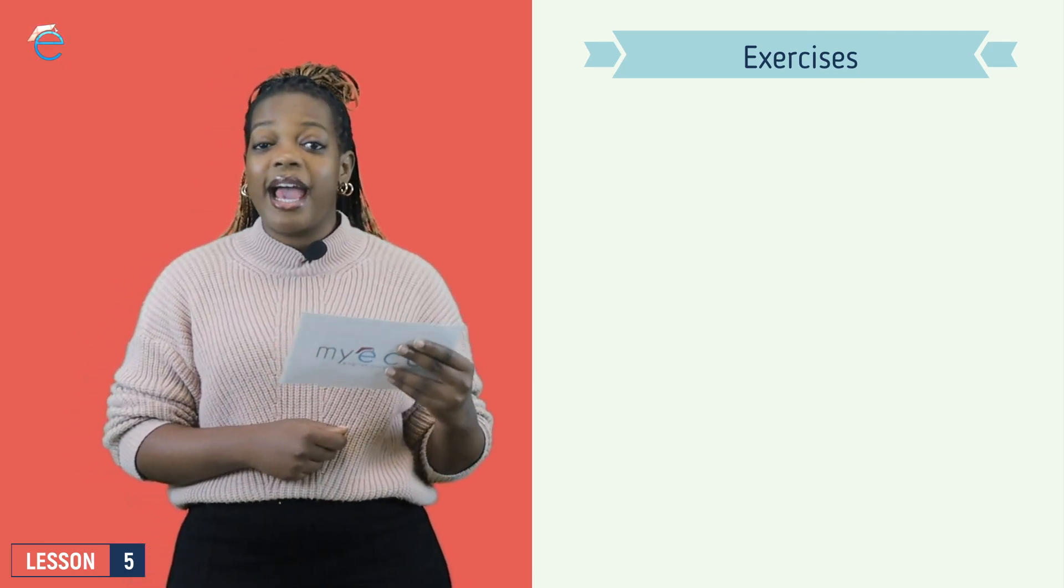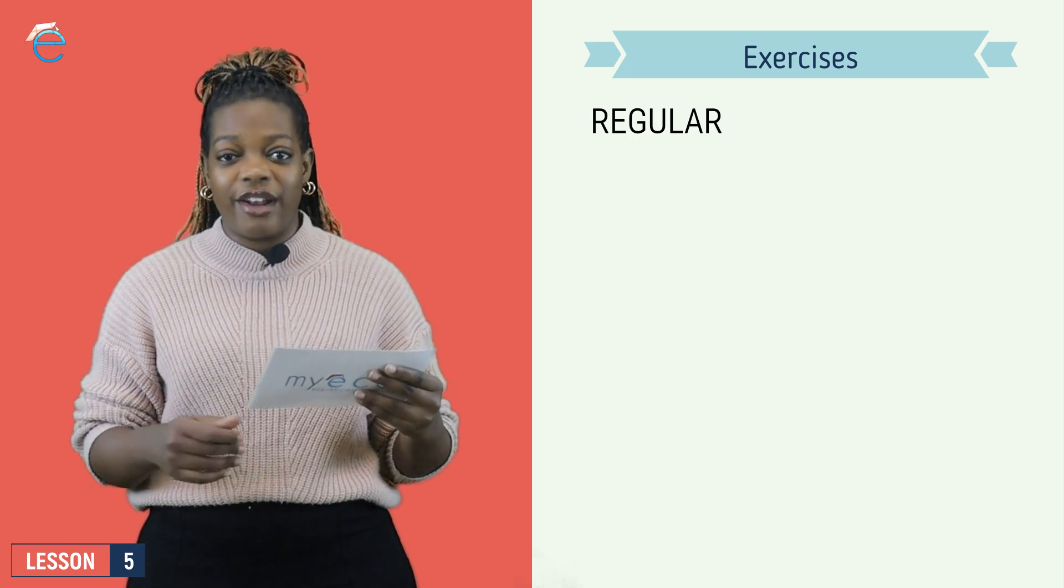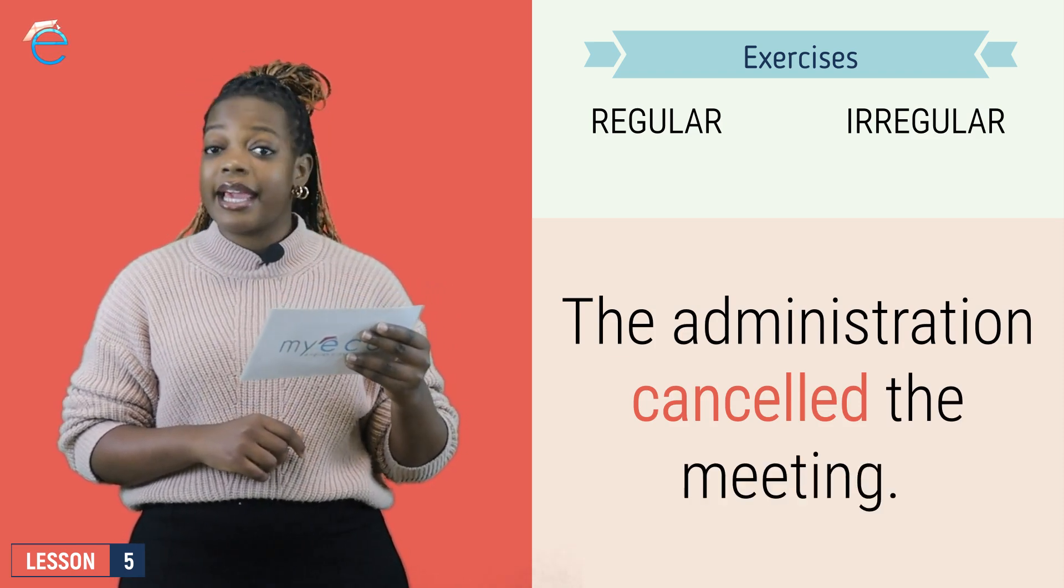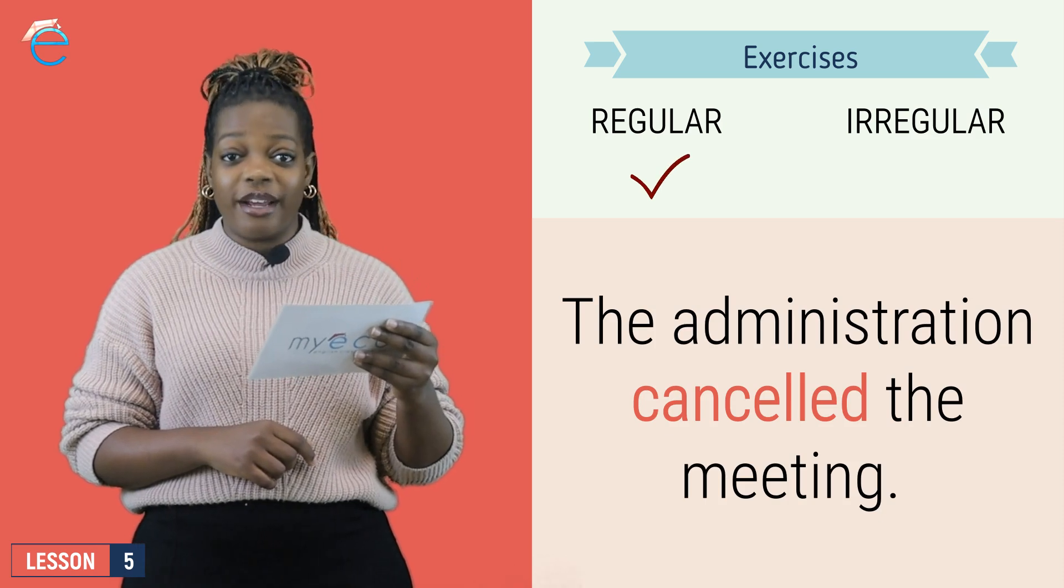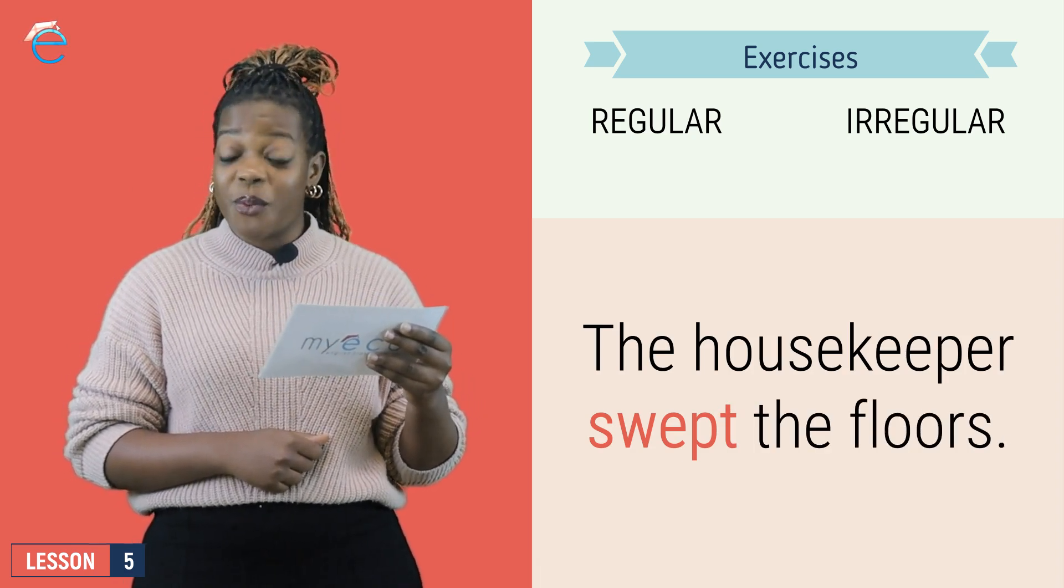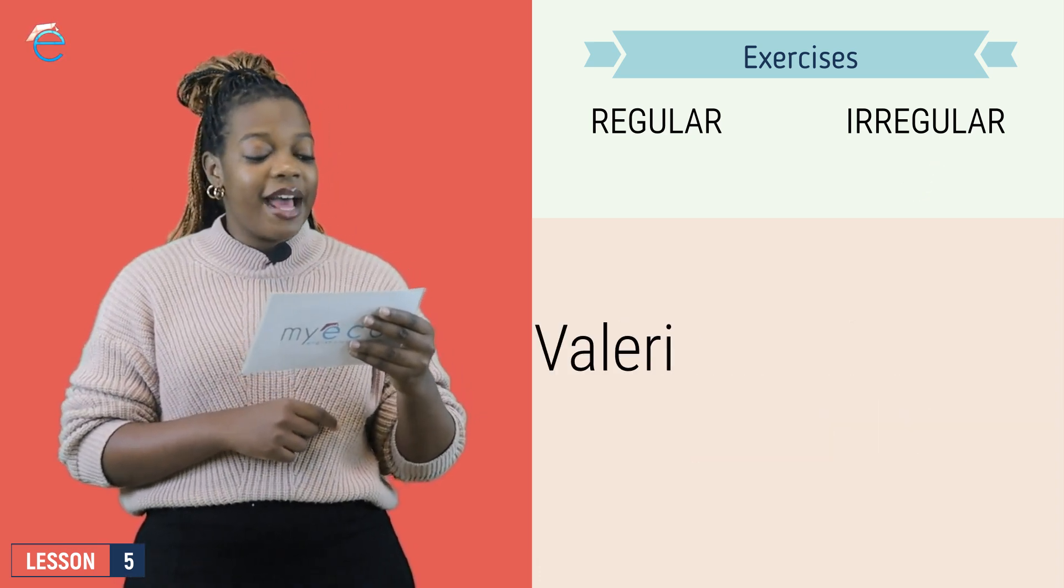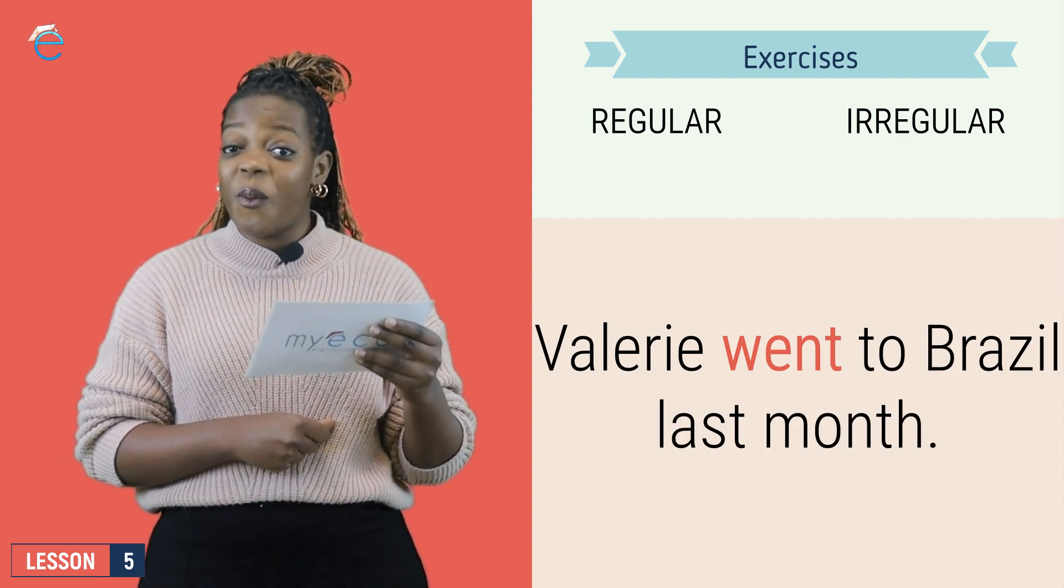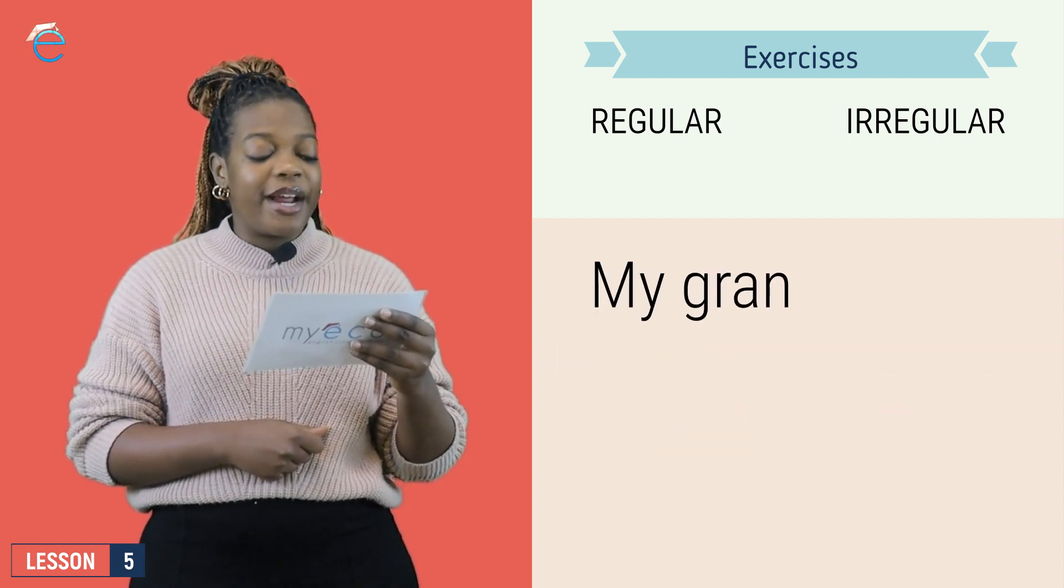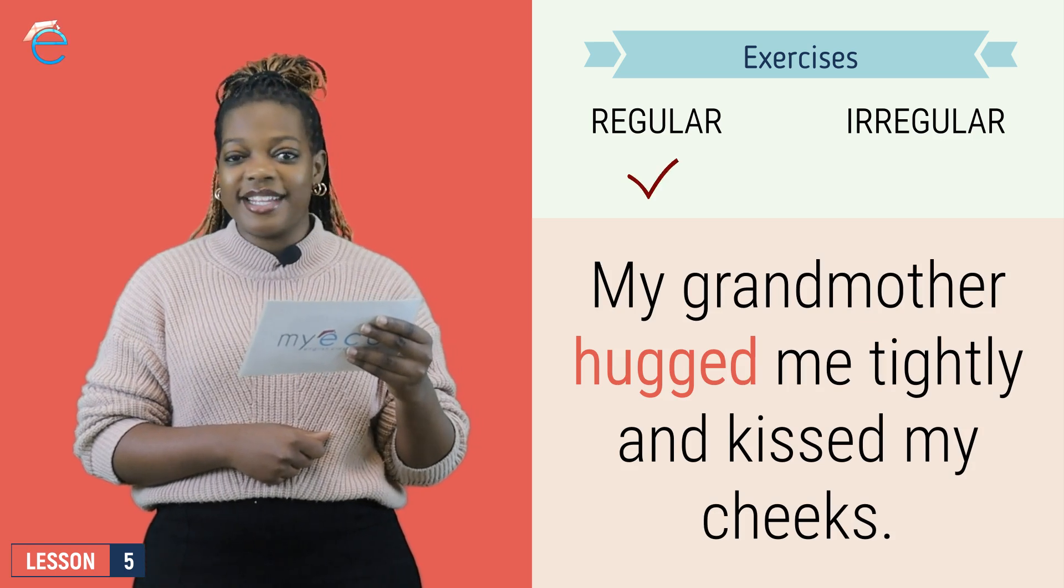Here we have some sentences and we need to see if the verbs are regular or irregular. Number one, the administration cancelled the meeting. Cancelled ed is regular. Two, the housekeeper swept the floors. Swept is irregular. Three, Valerie went to Brazil last month. Went is irregular. Four, my grandmother hugged me tightly and kissed my cheeks. Hugged is regular.